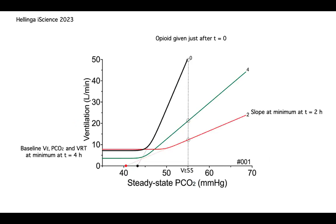Another important point: if you look at the CO2 response slope — x-axis is the effect-site CO2 concentration, y-axis is ventilation — we can see a very rapid peak. The maximum decrease in slope occurred after about two hours, after which the slope came back.